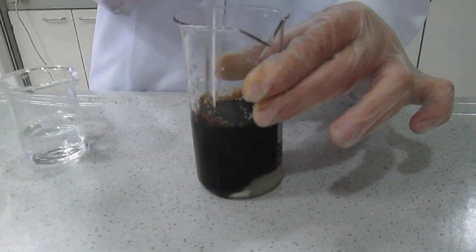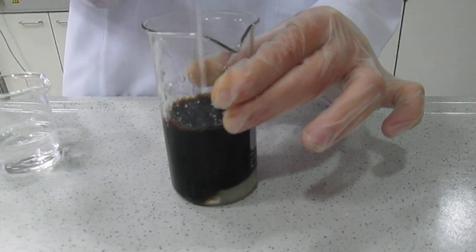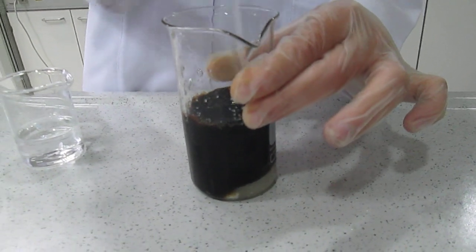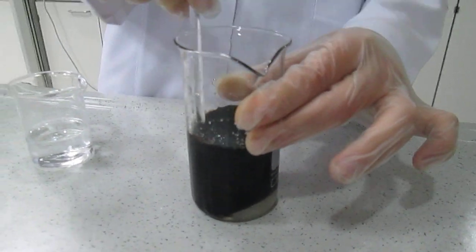As the acid goes in, the sugar quickly darkens because water has been removed from the sugar and black carbon has formed.